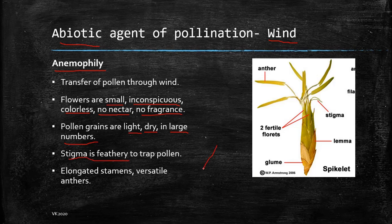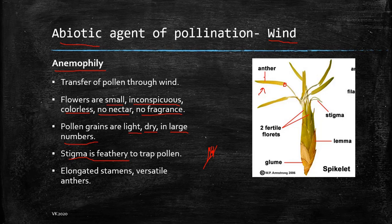The stigma is feathery to trap pollen — more the number of feathers, more the surface area and more the ability to trap pollen grains. The stamens are elongated and show versatile anthers. In wheat, for example, the anther is attached by a very small connective, which means the anther can move freely in the wind, leading to dehiscence and release of pollen grains. The pollen will fly with the wind and deposit on the stigma of another plant's flower. The stigma is also really feathery, which helps it trap these pollen grains.